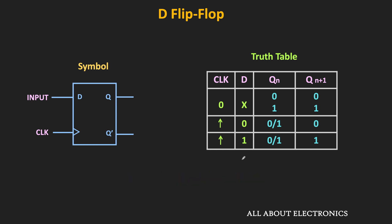Likewise, this is the symbol of the negative edge-triggered D flip-flop. As you can see, there is a small bubble on the clock input, which indicates that the flip-flop responds to the input only at the falling edge of the clock.